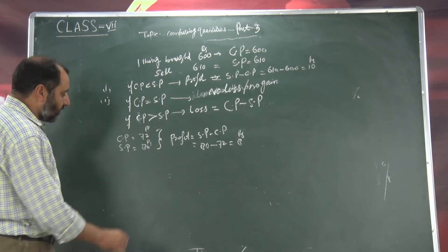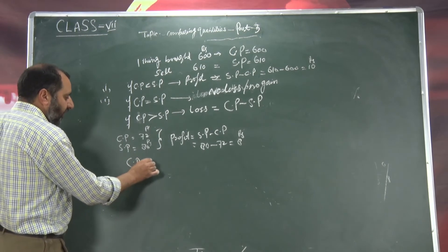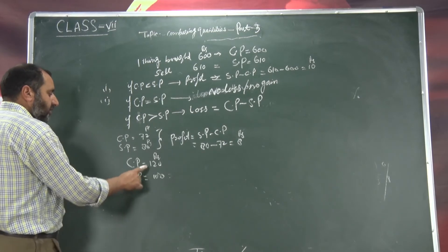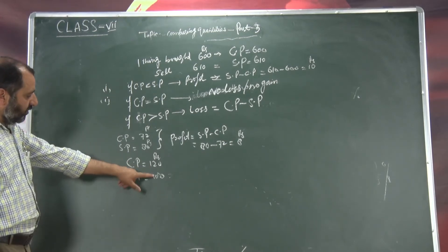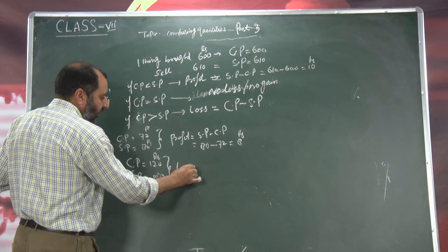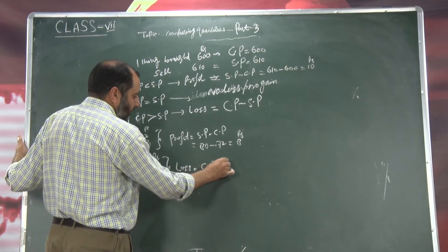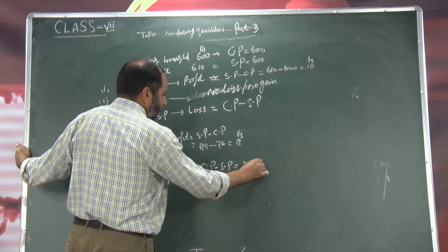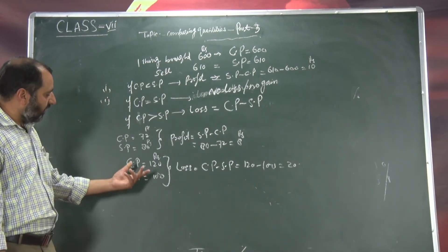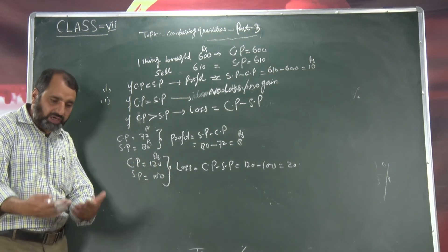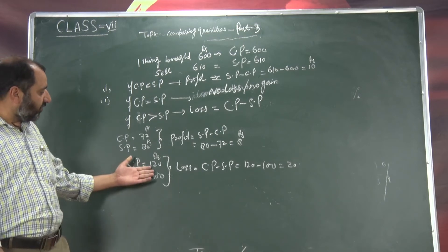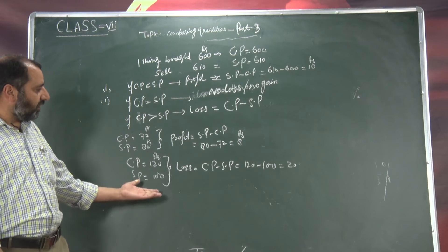Ab last example kya hai — agar cost price 120 rupees hoga kisi bhi item ka, to hum isko sell karte hai sirf 100 rupees mein. To yahan CP is greater than SP — CP chonki bada hai SP se, selling price se zyadha hai. To yahan loss hai. Loss is equal to CP minus SP — CP 120 minus SP 100 — wahaan raha 20. 20 rupees hume loss ho raha — kyunki cost price iska tha 120, humne isko 100 mein hi bheej diya, to wahaan loss hua 20.